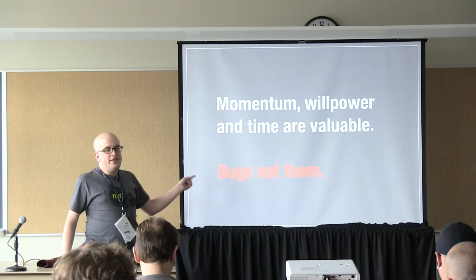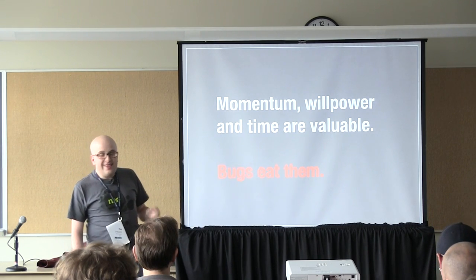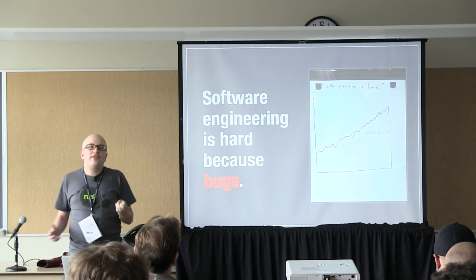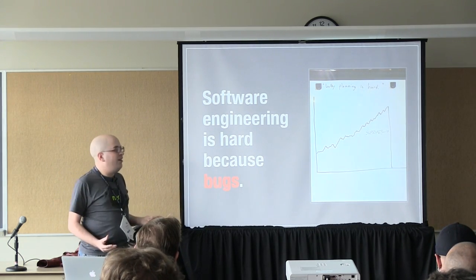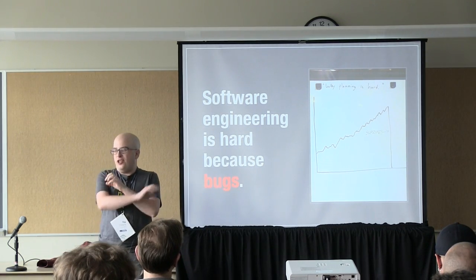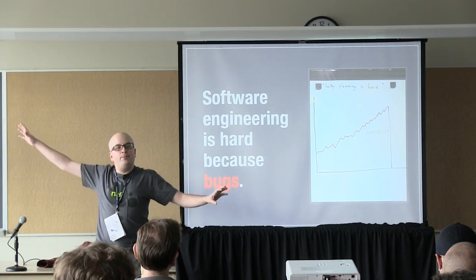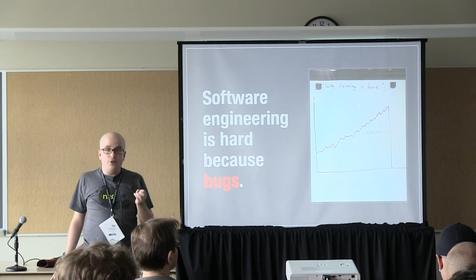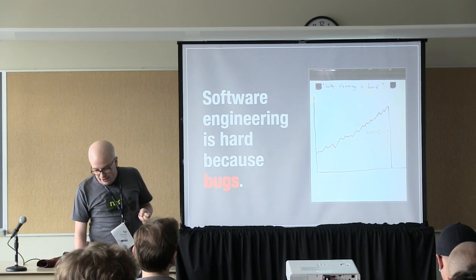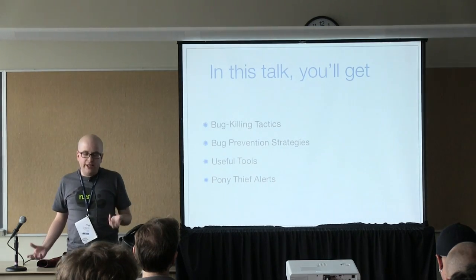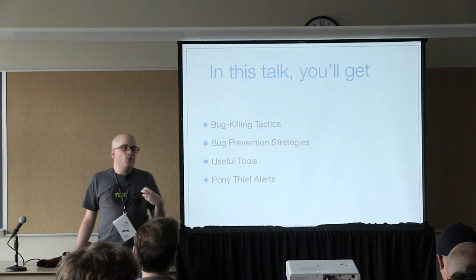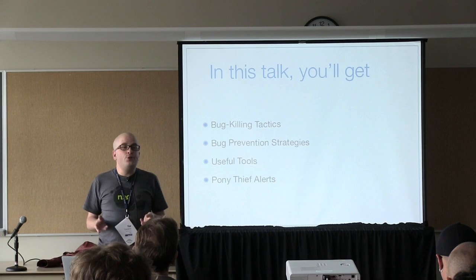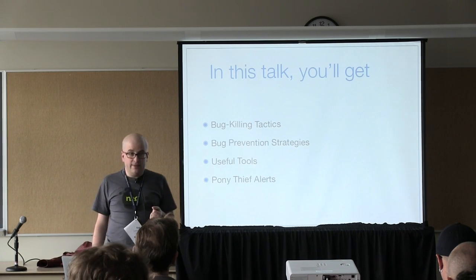Bugs are awful. And it's not just hobbyist projects — this is why software engineering is hard. This is why Gantt charts suddenly go spiraling out of control. Because when you hit a bug, you don't actually know how long it's going to take to fix. So, things I'll be going through include bug-killing tactics and strategies you can use to prevent bugs ever appearing in the first place.